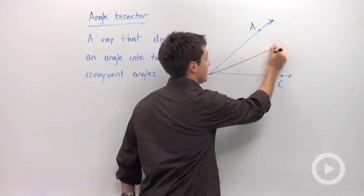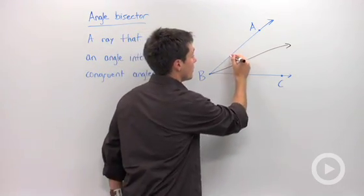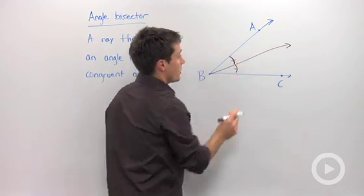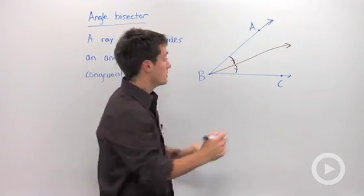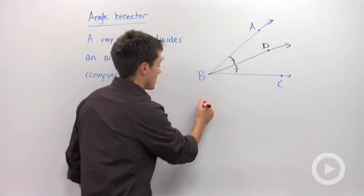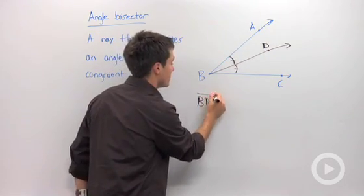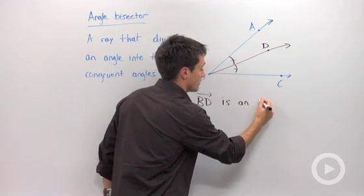So if I drew this in, and again I'm not constructing it here, it will divide this whole angle ABC into two congruent angles. So if I label this point D, then I could say that ray BD, notice how I labeled that, is an angle bisector.